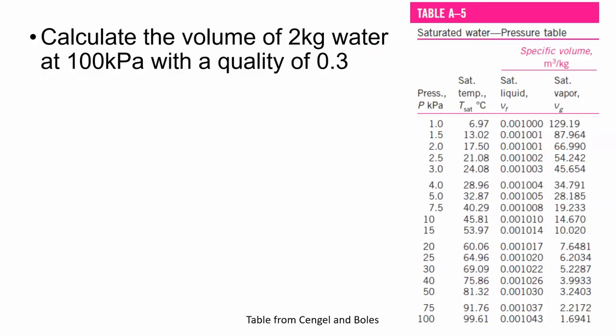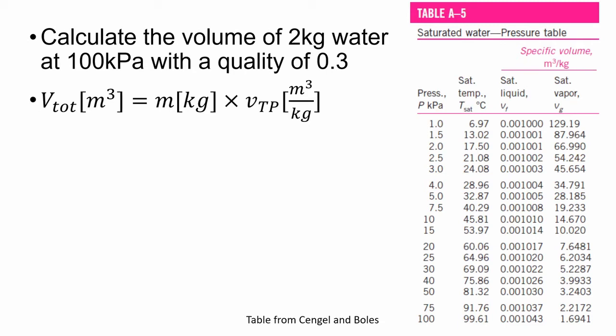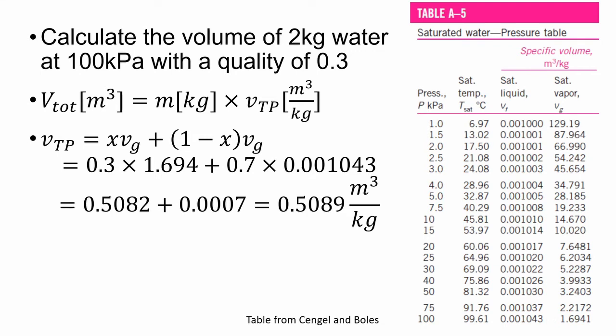Now let's do an example. The question asks that we calculate the volume of two kilograms of water at 100 kPa with a quality of 0.3. We know the total volume is equal to mass multiplied by the specific volume. And as the quality lies between 0 and 1, we know that for this question, the water is a two-phase saturated mixture. We therefore need to calculate the specific volume of a two-phase mixture, which is given by the equation shown. We find the values of the saturated liquid and the saturated vapor in the saturated water pressure table. And at 100 kPa, we have the value for specific volume for saturated liquid and the specific volume for saturated vapor, and we get an answer of 0.5089 cubic meters per kilogram.